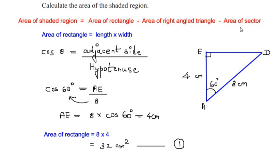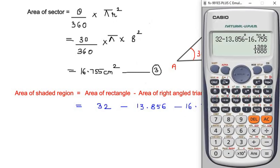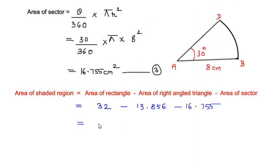Now substituting all three values: area of shaded region = 32 − 13.856 − 16.755 = 1.389, which rounded to three significant figures gives 1.39 centimeters squared. So this is the area of the shaded region.